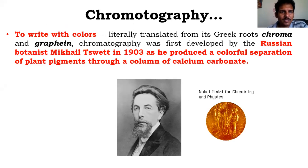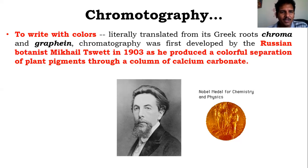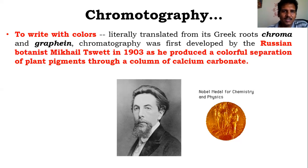Chromatography was initially coined by a Russian botanist, Michael Tessward, in 1903. His research was about producing colorful separation of plant pigments through a column of calcium carbonate. Chromatography essentially means writing with colors — 'chromo' means color, 'graph' means to write or record. He received a Nobel Prize for this work.